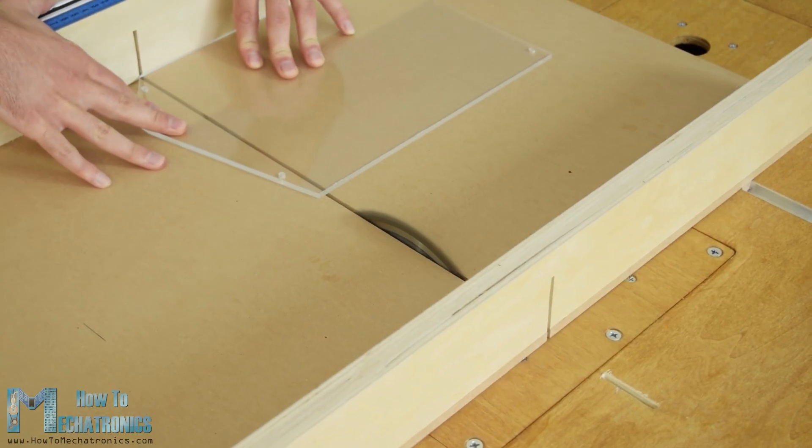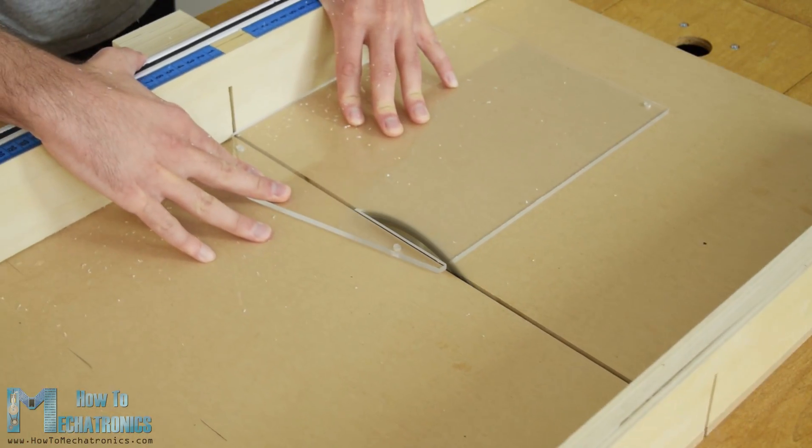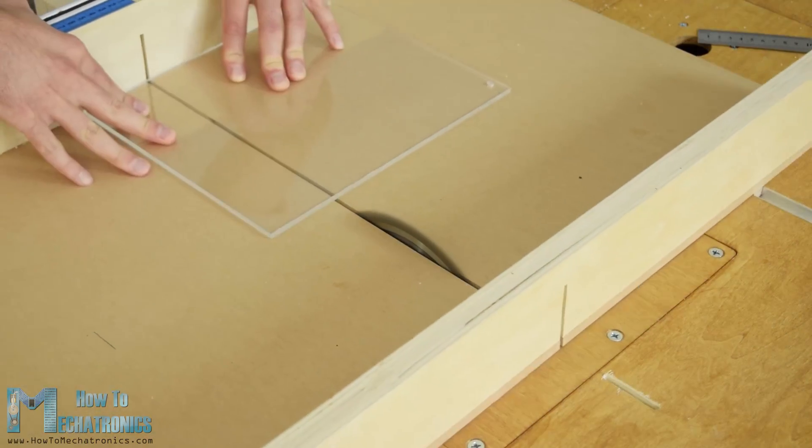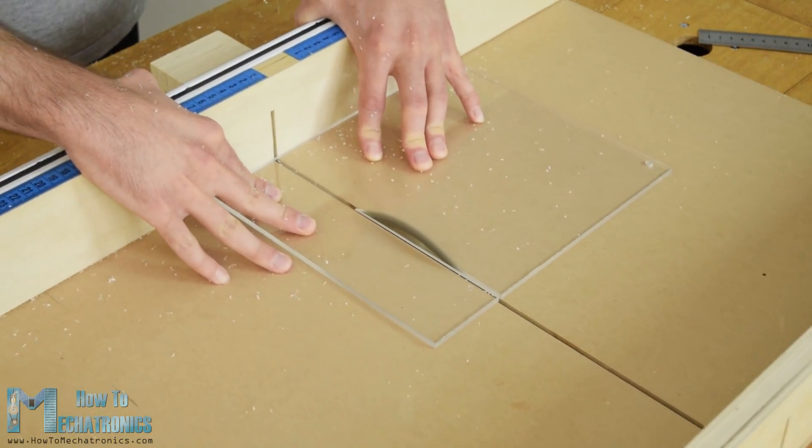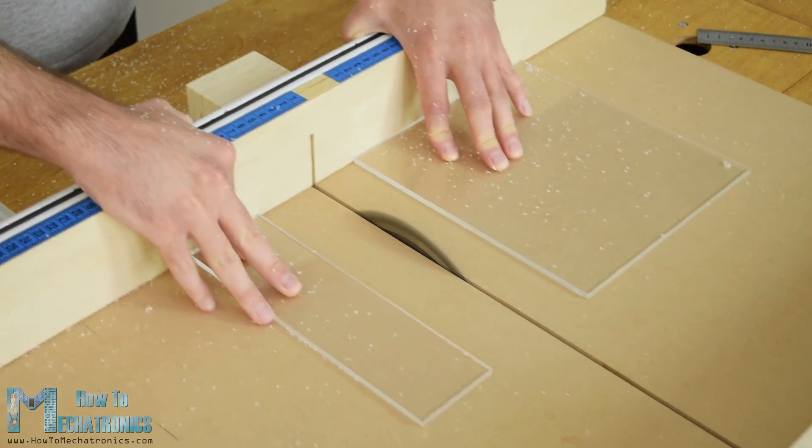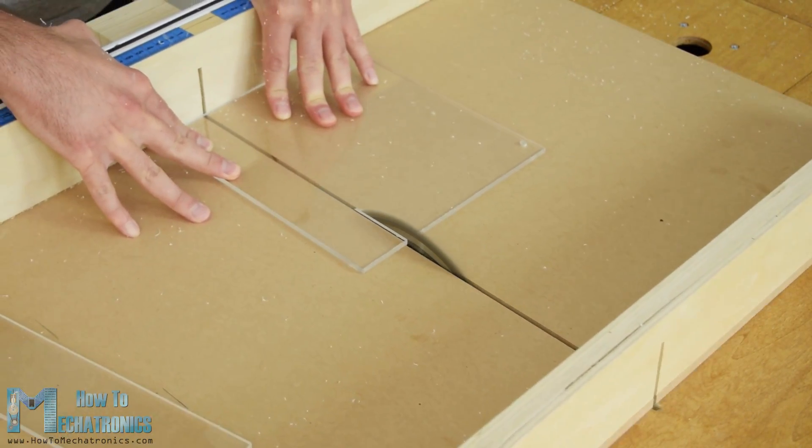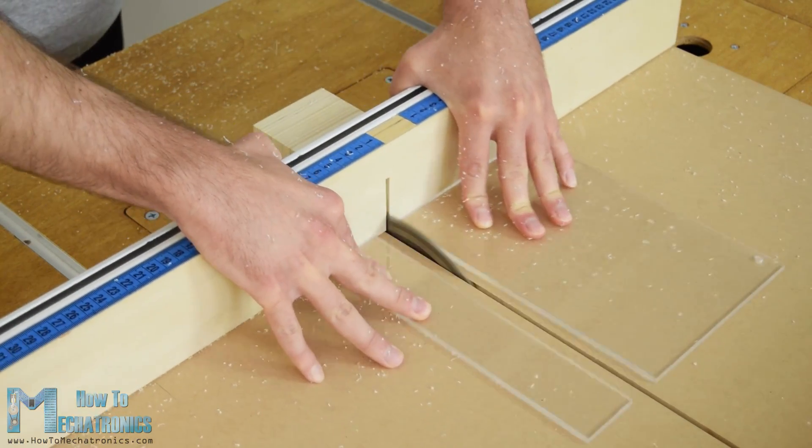Next I moved on with making the case for the device. I decided to use a transparent acrylic because I wanted the beauty of all electronics components to be visible. I had some 5mm thick acrylic from an old project and I used a circular saw for cutting it to size.